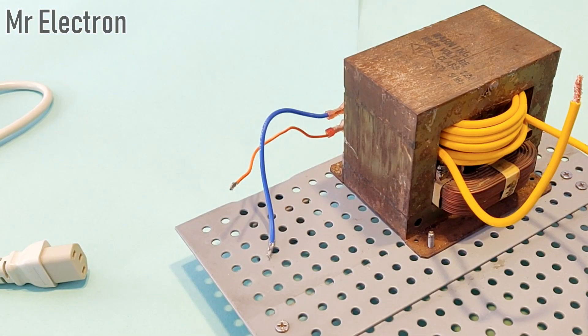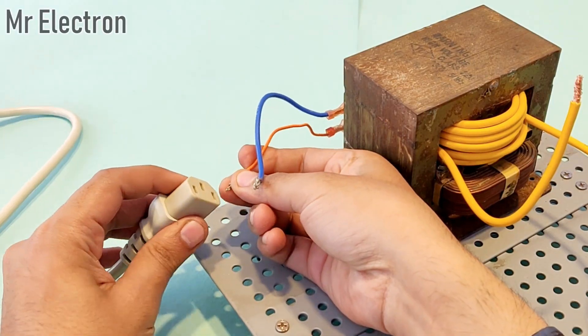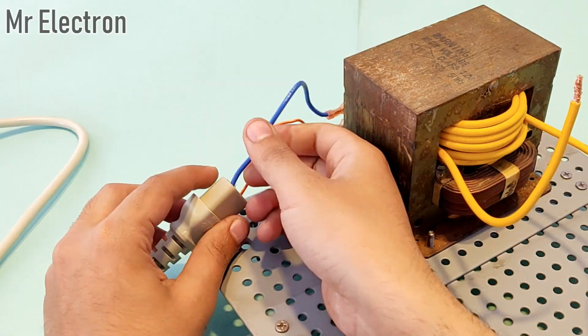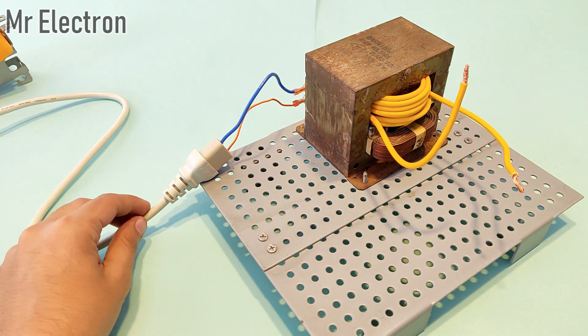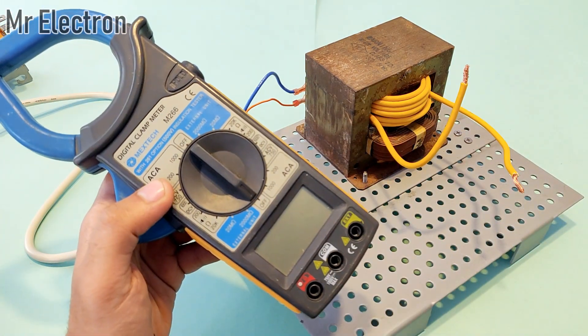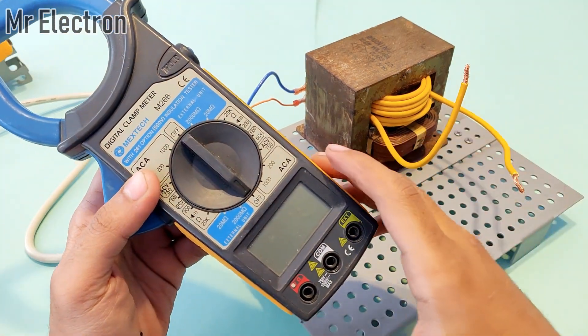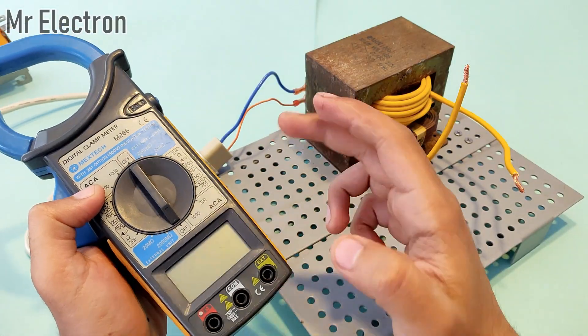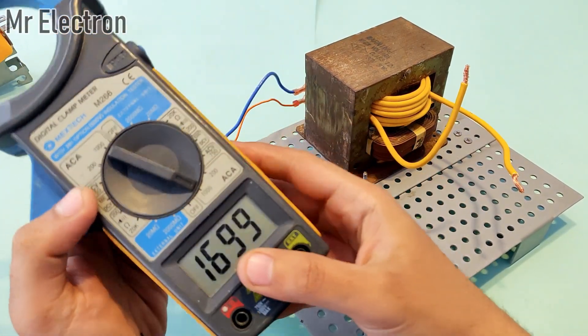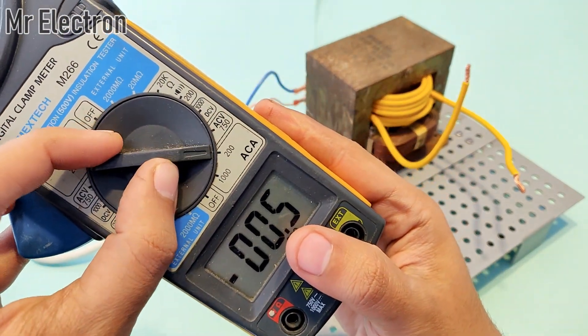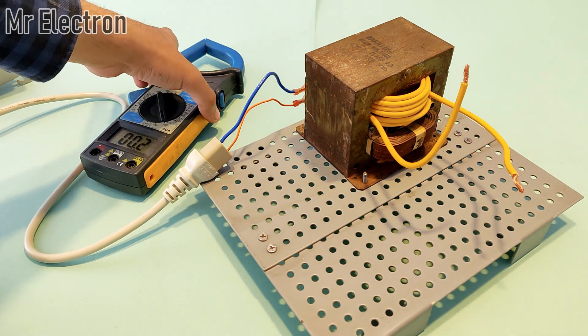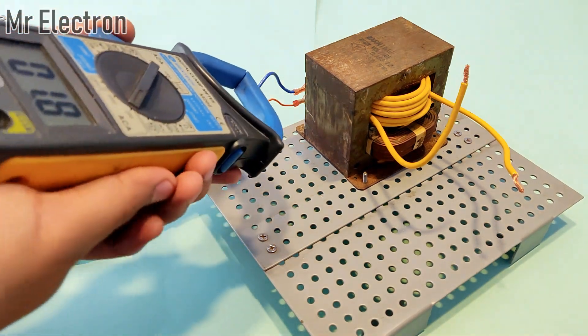just show it to you. Now I have to turn on the input supply from the socket. So guys, this is the clamp meter that I will use to measure the input amps that this transformer is consuming at no load. Moving the pointer towards 200 amps. Okay, so the transformer has started. Now let's measure the amps.